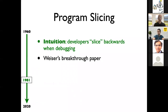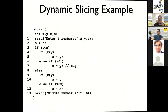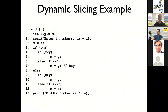People then started thinking about a different way of computing slices — instead of static slices that account for all possible program behaviors, they started thinking about dynamic slices. Korel and Laski proposed dynamic slicing in 1988, and then in 1993, Agrawal proposed using dynamic slicing for debugging. Dynamic slices only consider dependencies that were actually exercised within an execution.